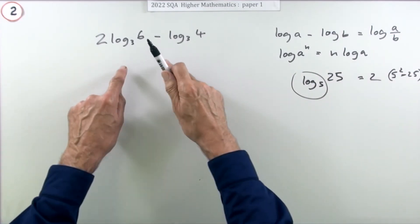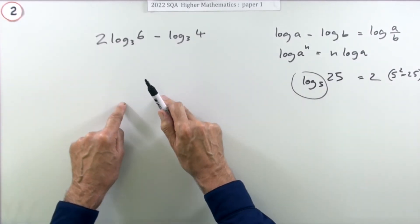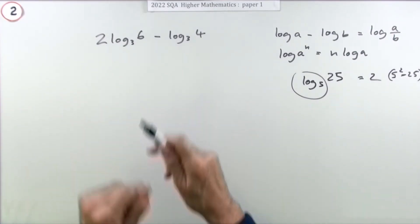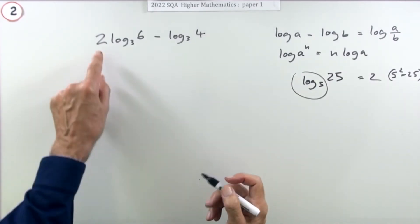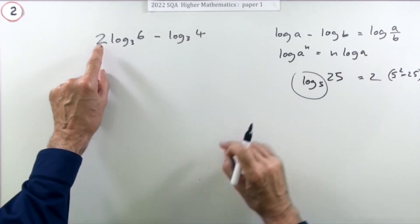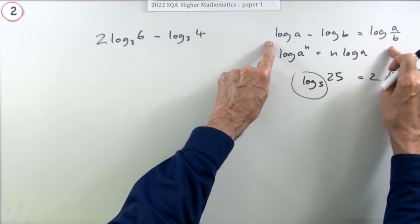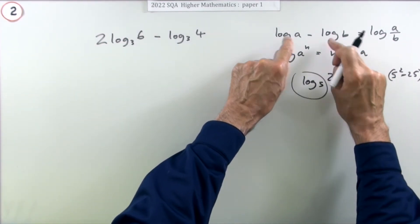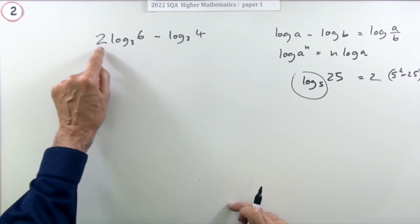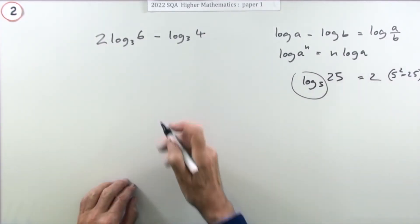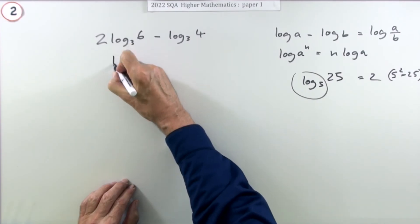Well, the first step I'm going to use is this one here. I can pop that two inside because I can't use this one unless I've just got bare logs. I can't do it with this two in front, so that two is going to pop in. So the next line will be log₃ of 6 squared minus log base 3 of 4.